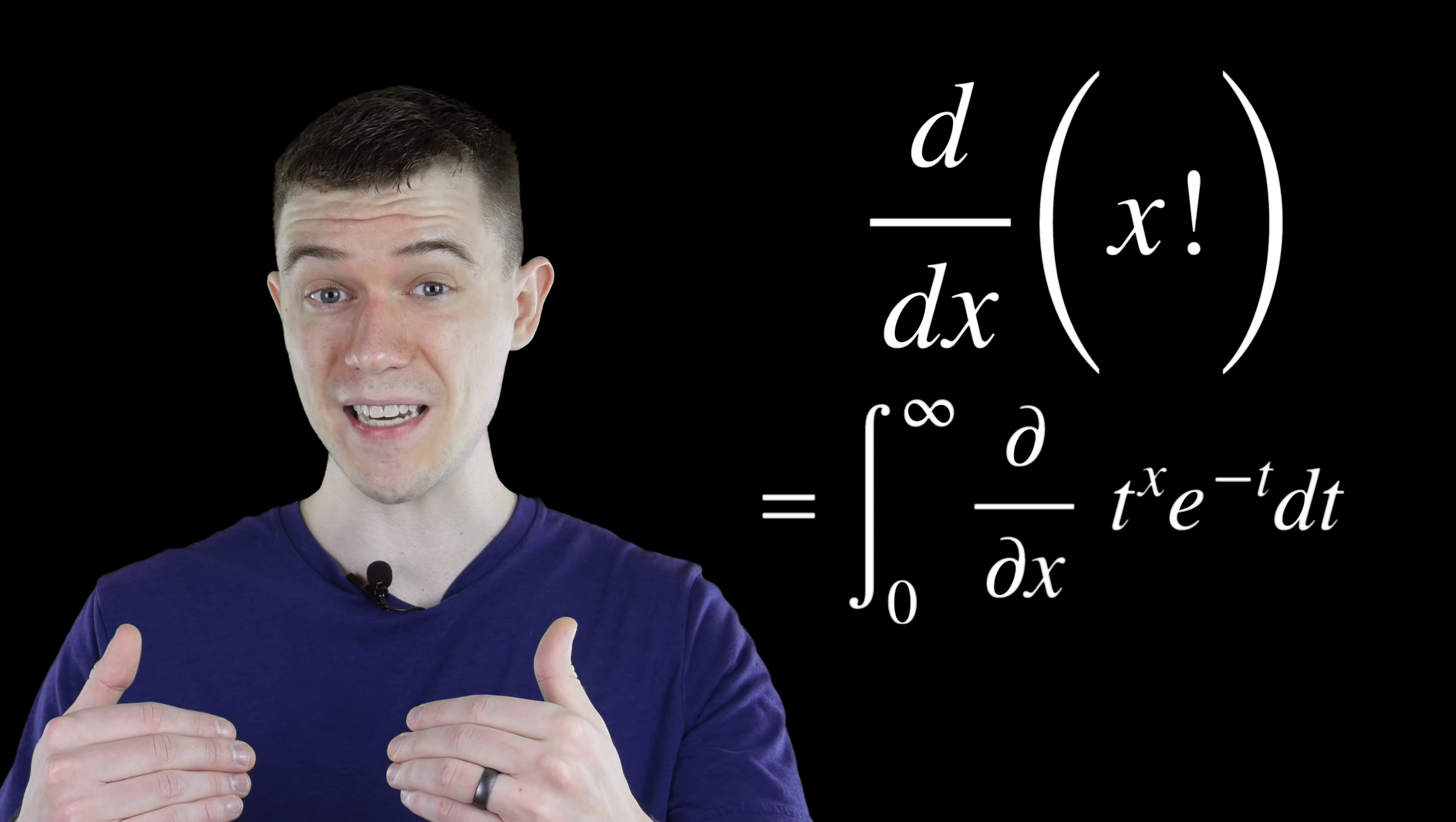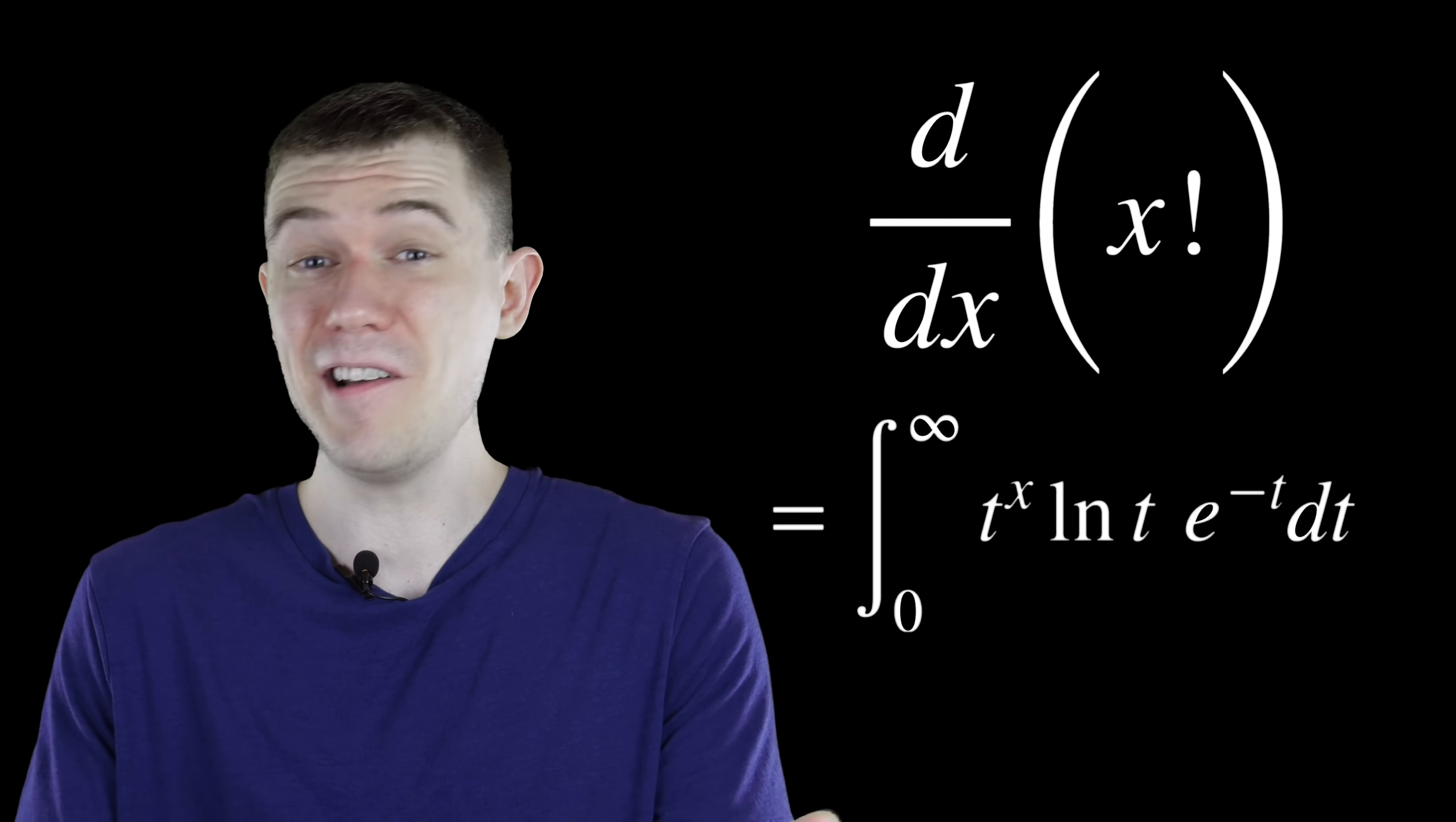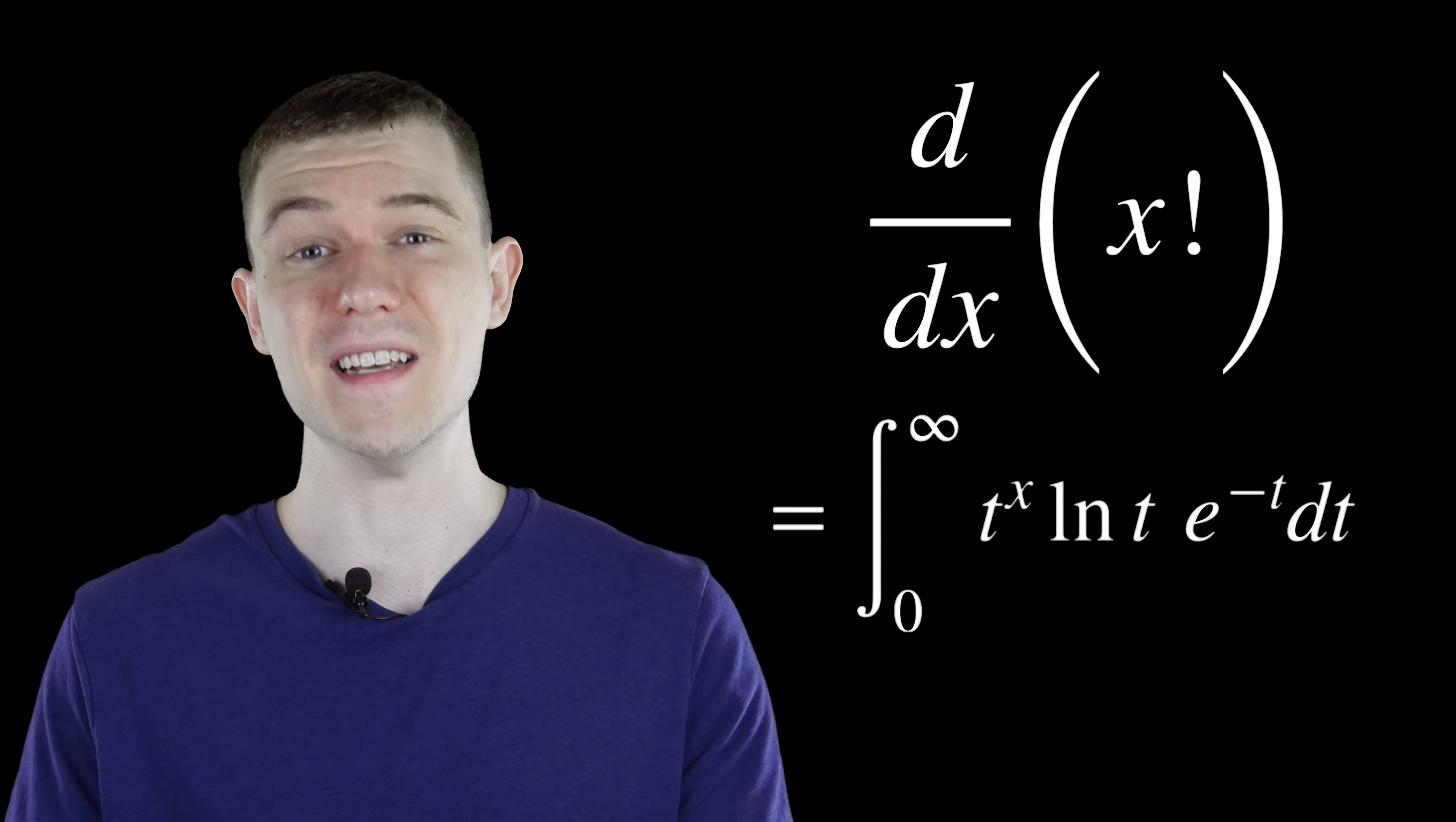All we have to do is differentiate t to the x. Here, again, it's base t, the variable is x. So the derivative of t to the x, that's t to the x, natural log t. And hey, there we go. We have the derivative of the factorial function for any x value you'd like in terms of this improper integral.